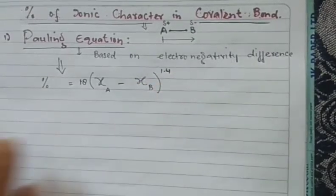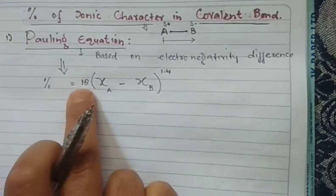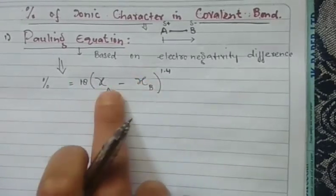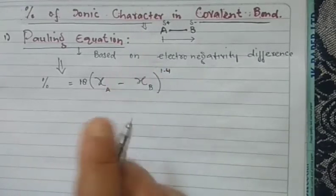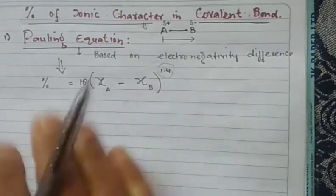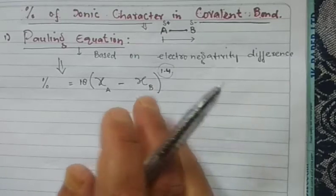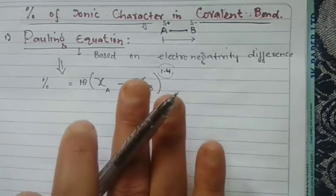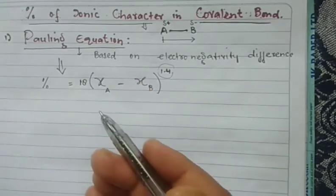This is called Pauling's equation for the calculation of ionic character in a bond. The factor 18 was determined from different experiments. You take 18, multiply it by the difference in electronegativity, and raise that to the power of 1.4. This equation gives the percentage of ionic character in a covalent bond.